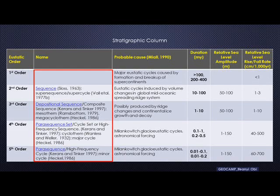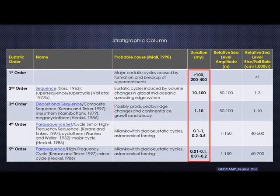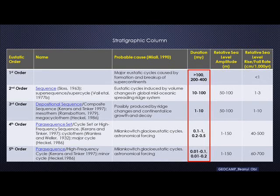Another column to pay attention to is the fourth column, which is the accurate duration. This column focuses on the duration between one episode of sea level change and the other. For example, at the first order, we're looking at between 200 and 400 million years interval. At the second order, 10 to 100 million years. And all the way down to the fifth order, we're looking at 0.01 to about 0.1 million years interval. This tells us at what frequency the global sea level has changed and how that relates to the name and properties of each package.